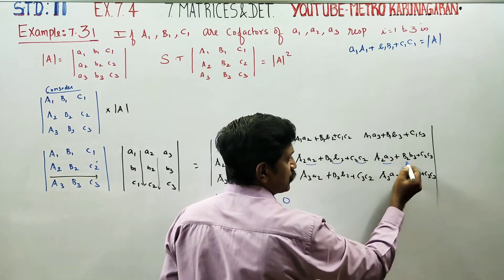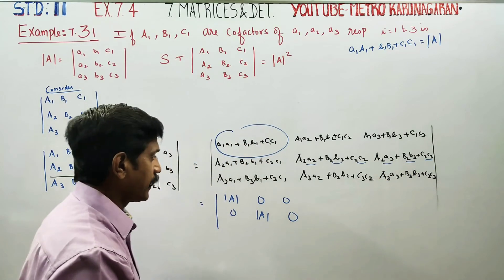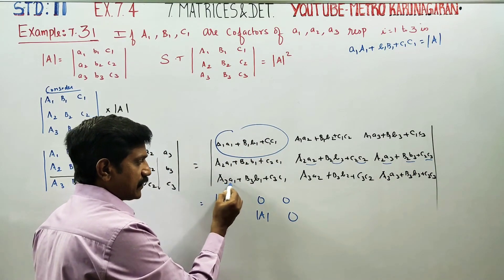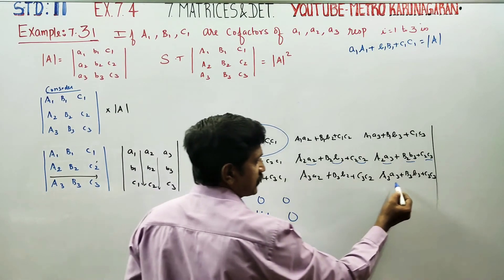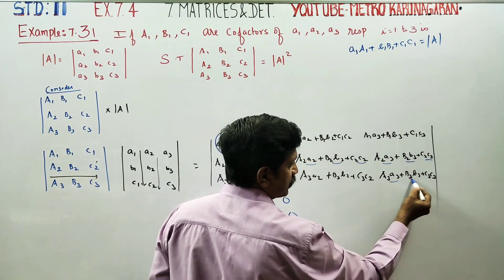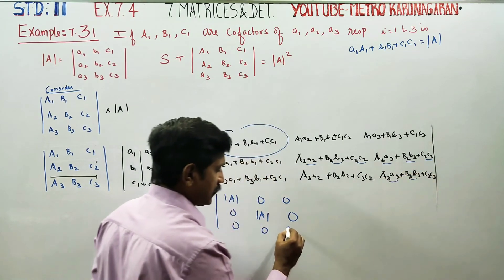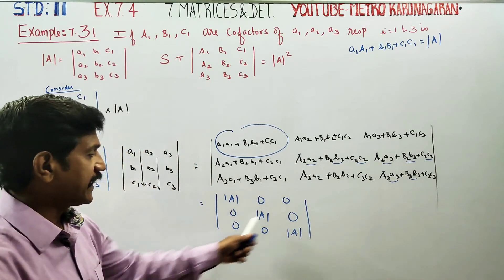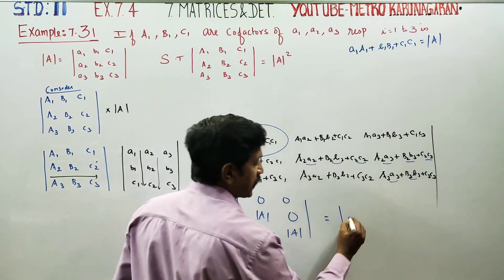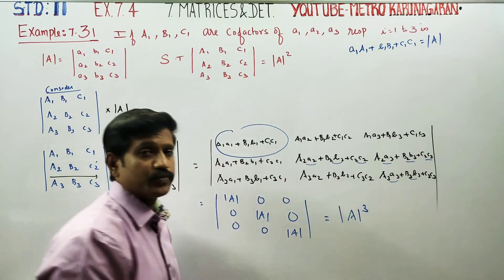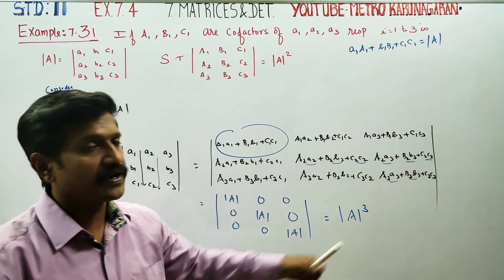So: elements from rows 2 and 3 multiplied by cofactors of row 3 give 0. A3 cofactor, B3 cofactor, C3 cofactor — that's the determinant A. This is a full expansion. Some terms are 0 and cancel out, leading to determinant A. We started with this and we have arrived at determinant A cubed as the answer.